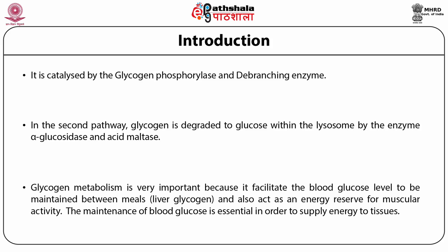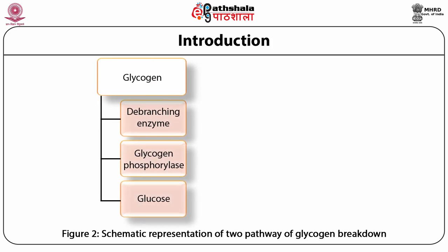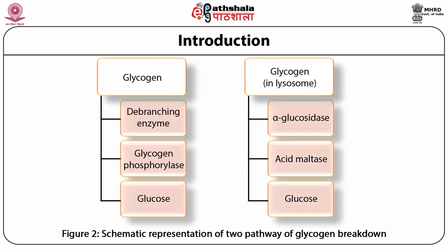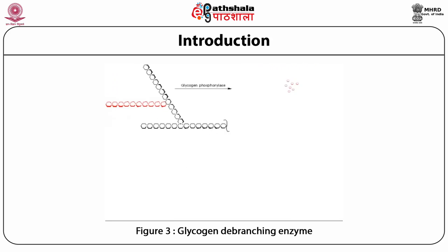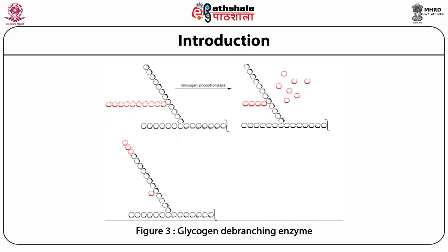Glycogen metabolism is very important because it helps maintain blood glucose levels between meals and acts as an energy reserve for muscular activity. The maintenance of blood glucose is essential for supplying energy to the tissues. Glycogen is broken down to glucose by the debranching enzyme and glycogen phosphorylase, or broken down in the lysosome by alpha-glucosidase and acid maltase. The glycogen debranching enzyme removes glucose molecules one by one from the glycogen molecule.